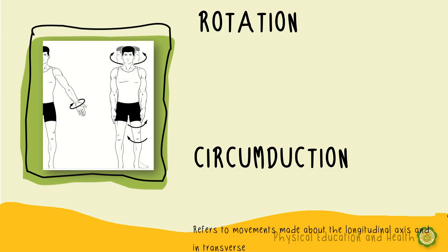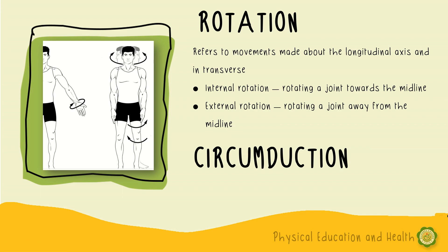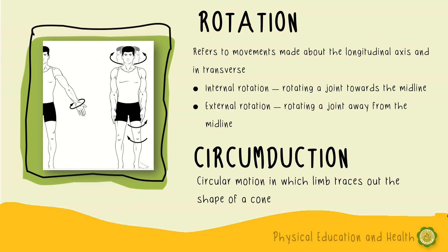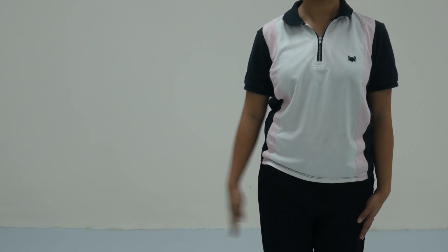Next is rotation and circumduction. Rotation refers to movements made about the longitudinal axis and in the transverse plane. Circumduction is a circular motion in which a limb traces out the shape of a cone. We have two kinds of rotation: internal rotation and external rotation. Internal rotation is when the joint moves toward the midline, and external rotation is away from the midline. Circumduction is a combination of flexion, abduction, extension, and adduction — it is a circular movement.